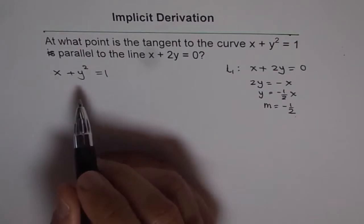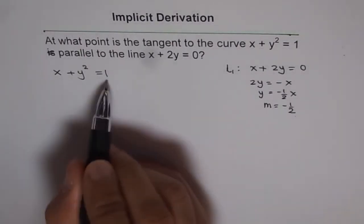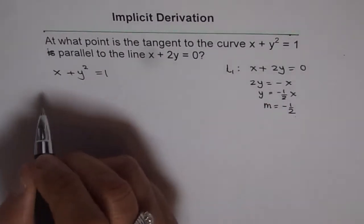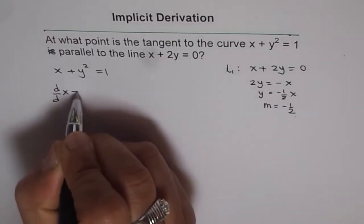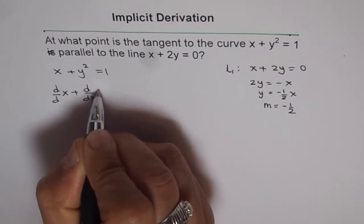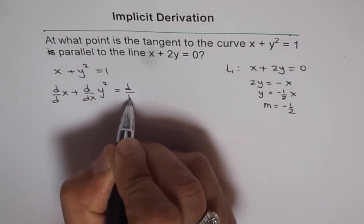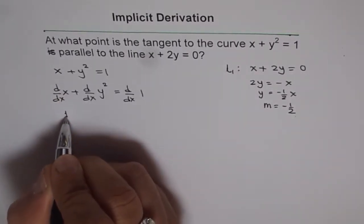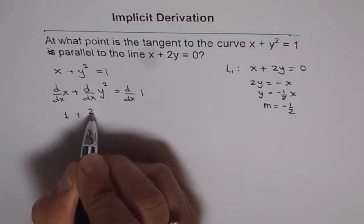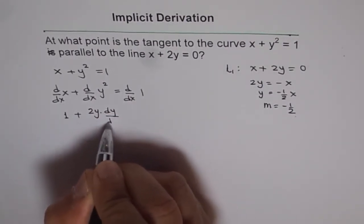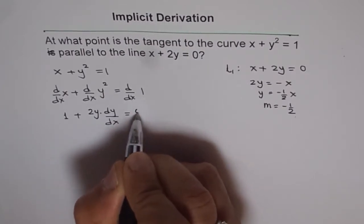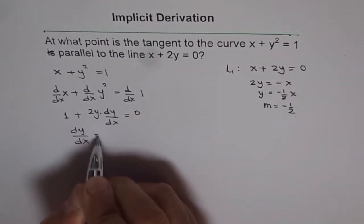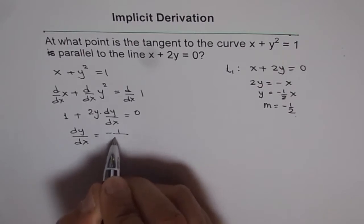What we will do is find the derivative with respect to x on both sides, then equate dy/dx to minus half to find the point. So we take d/dx of x plus d/dx of y squared equals d/dx of 1. That gives us 1 plus 2y(dy/dx) applying the chain rule, which equals 0. So from here we get dy/dx equals minus 1 over 2y.